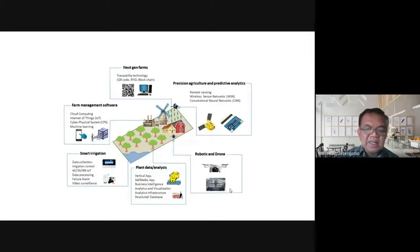The system senses when water is low and automatically opens the faucet, delivering just enough water as needed by the plant. It's computed how much is needed using sensors. Then you have farm management software with cloud computing. Have you heard of IoT or Internet of Things? There's also cyber-physical systems and machine learning. Machine learning means machines learn from the amount of data.